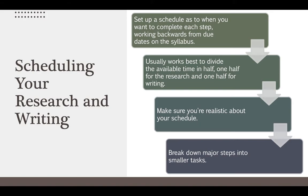It usually works best to divide your available time in half — half for research and half for writing. That gives yourself plenty of time to find sources that fit the assignment, read them, understand them, and then start writing about what they say about each other and about your topic. Make sure you're realistic about your schedule. If there's something happening — an event, a party, something with your family — don't assume you'll run away from all that and work diligently. Be realistic about how long it takes you to find, write, and organize things.